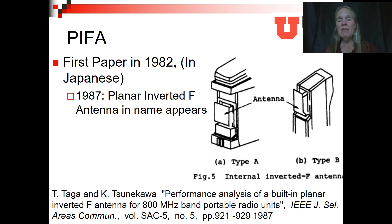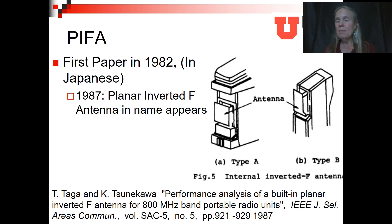One of those ideas is the PIFA, or the Planar Inverted F Antenna. The first paper on PIFAs was seen in 1982, written in Japanese. In 1987, the name Planar Inverted F appears. A PIFA antenna has a flat plane — which might be any shape at all — and it has a feed point and a ground pin that make up the rest of the F.